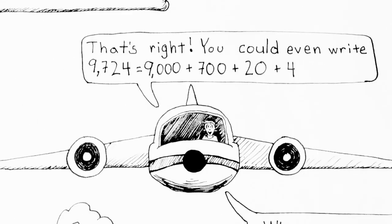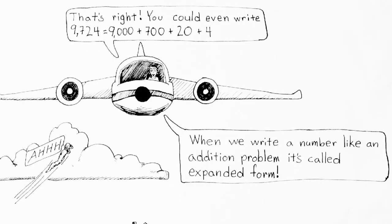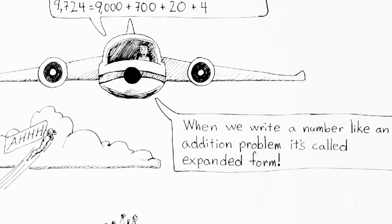You could also write it like this: 9,724 equals 9,000 plus 700 plus 20 plus four. That shows us that we have 9,000 in the number, we have 700 in the number, we have 20 in the number, and four in the number — those are the different groups, the different parts that make that number. When we write a number like this, as an addition problem, it's called expanded form. Expanded form is very useful for seeing how much each of those digits are worth.